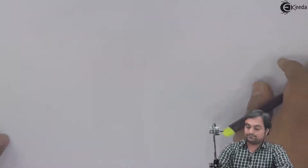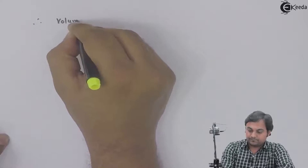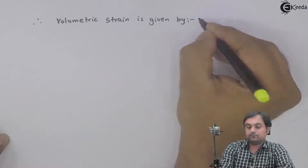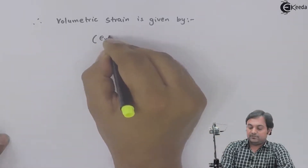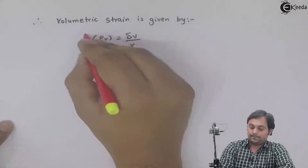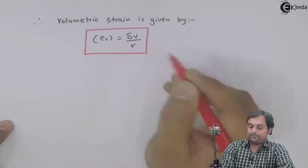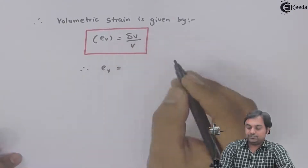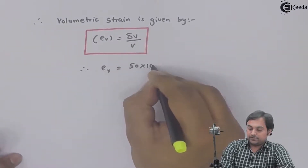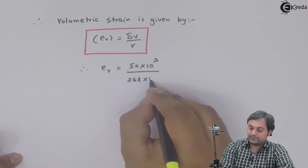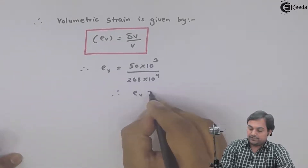Therefore, volumetric strain eᵥ is given by change in volume divided by original volume. So volumetric strain = ΔV / V = 50×10³ divided by 268×10⁹.